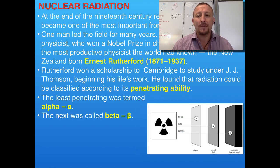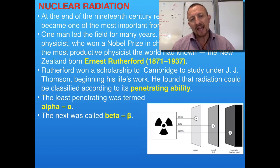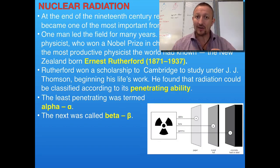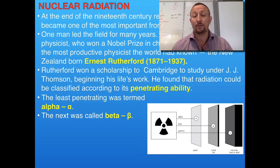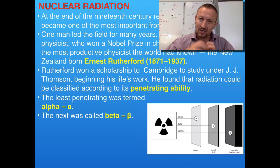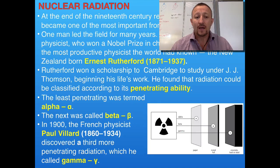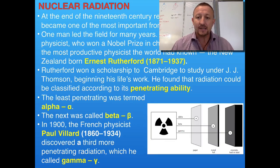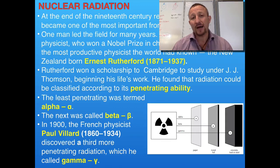Beta particles can get through paper and metal foils, but they're only going to be thin foils. Their penetrating ability will not go through thick substances where the atoms are closely compacted. It wasn't until Paul Villard later on discovered gamma rays, and gamma rays are the most penetrating out of all of the radioactive particles.